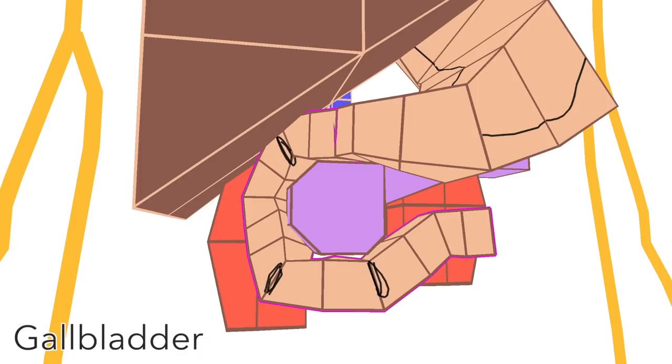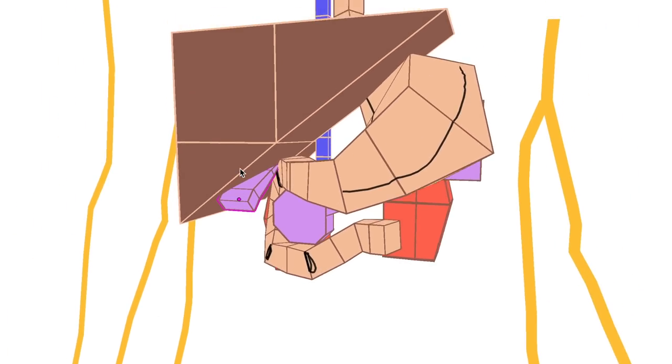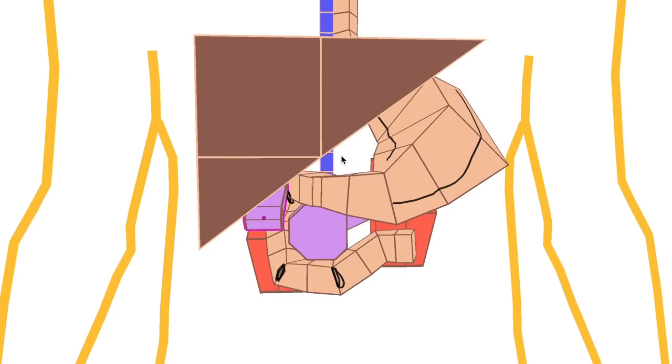The gallbladder sits just here, anterior to the first part of the duodenum. You may have noticed that there is this space here.